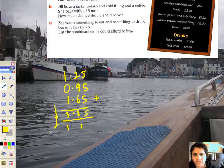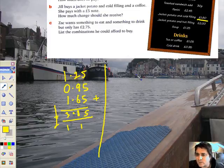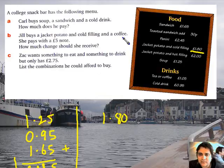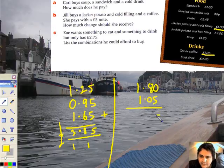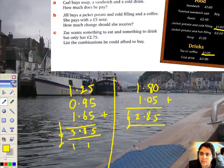Now Jill, on the other hand, she's going to buy a jacket potato and a cold filling and a coffee. She's a sensible girl. And she'll pay with a £5 note, how much change should she receive. But let's work out how much she has to pay first of all, and then we'll worry about giving her some change later. Right, what have we got? Jill's got a potato with a cold filling, so there it is, £1.80. Jill's going to buy a cup of coffee with that, and coffee's down there at £1.05.